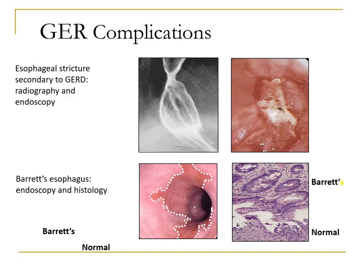Reflux complications can be visualized on imaging. A barium swallow can show an esophageal stricture, and upper endoscopy can show a very tiny esophageal lumen secondary to stricture or peptic stricture formation. In another slide, you can see Barrett's esophagus — appreciating the difference between normal and abnormal esophageal mucosa, and histopathologically, the difference between normal squamous epithelium and the columnar epithelium that develops from long-standing reflux.